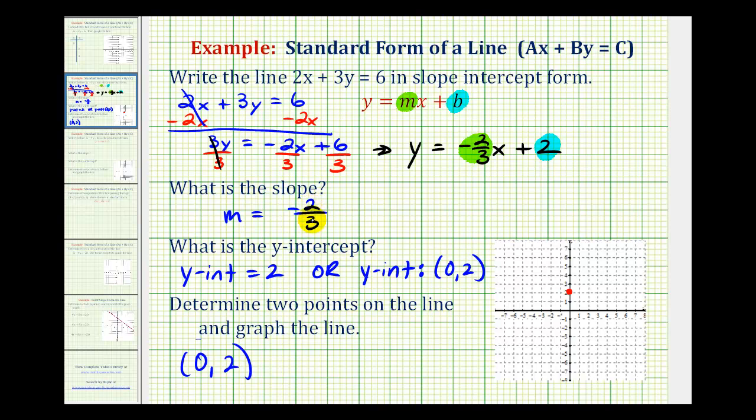And then since the slope is negative 2/3, from the y-intercept we'll move down 2 units and right 3 units. And we move down 2 units because the rise or the vertical change was negative 2. And we move right 3 units because the run or the horizontal change was positive 3.